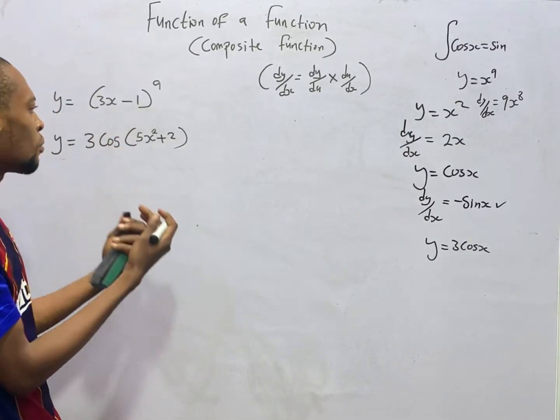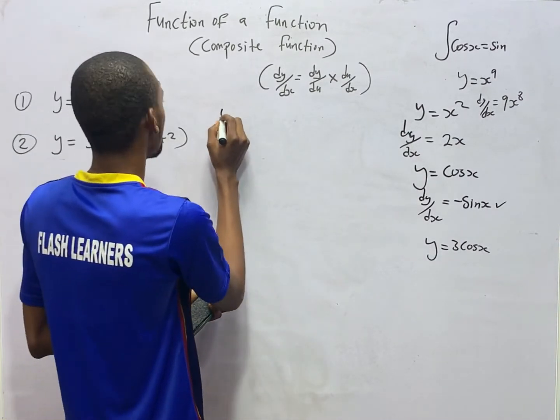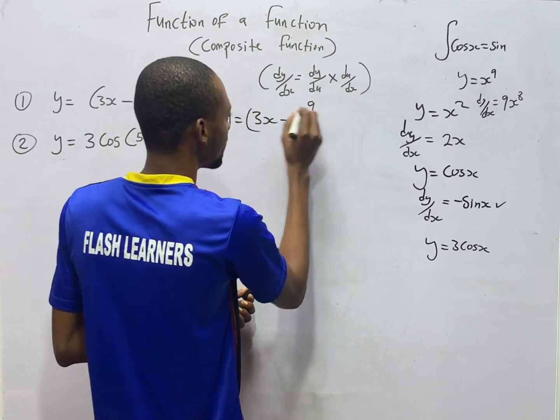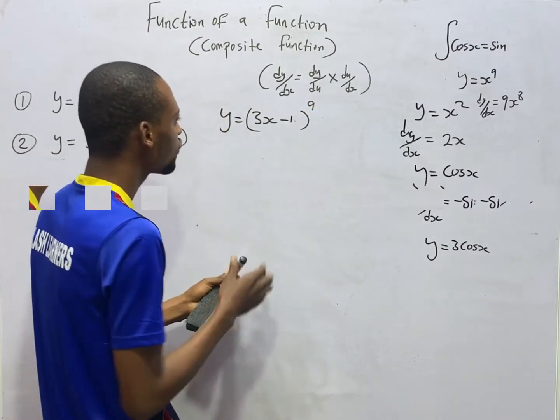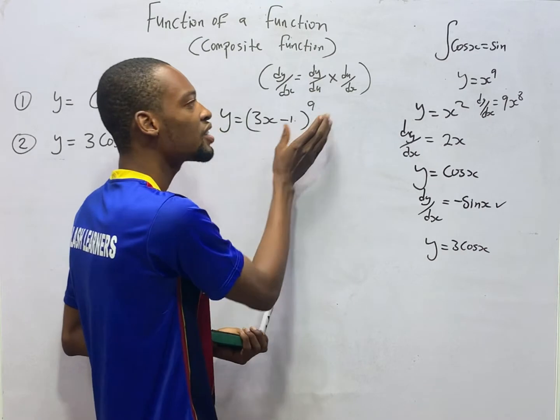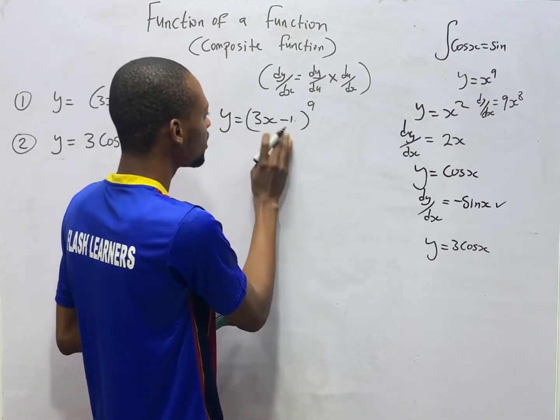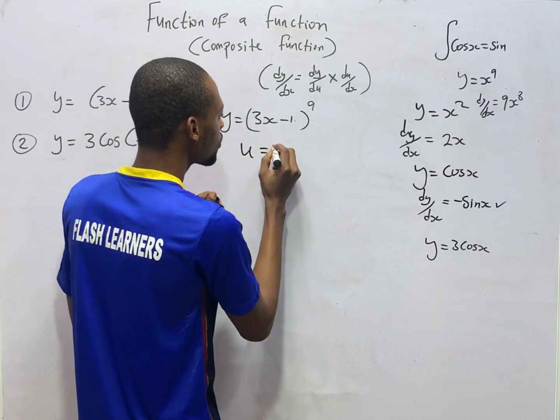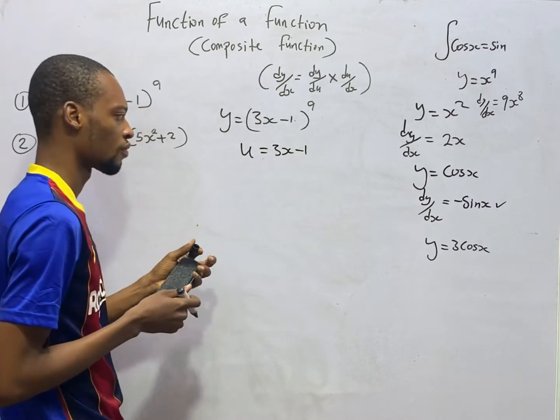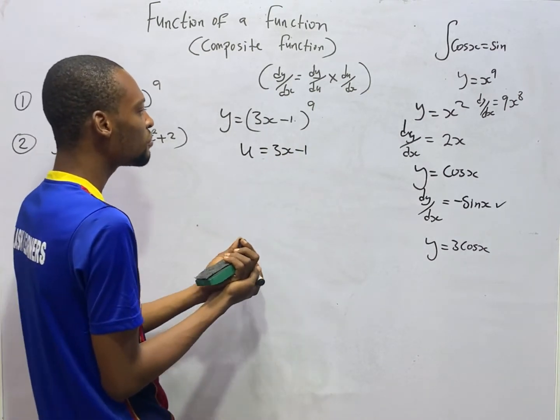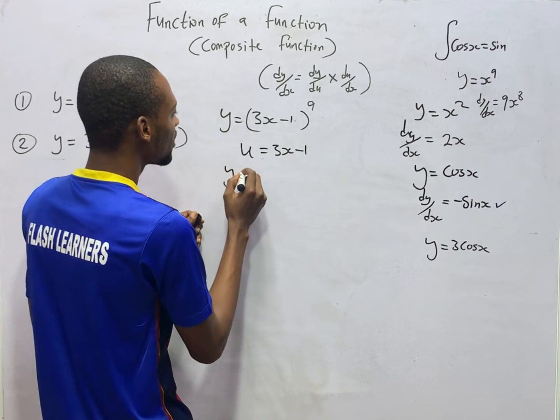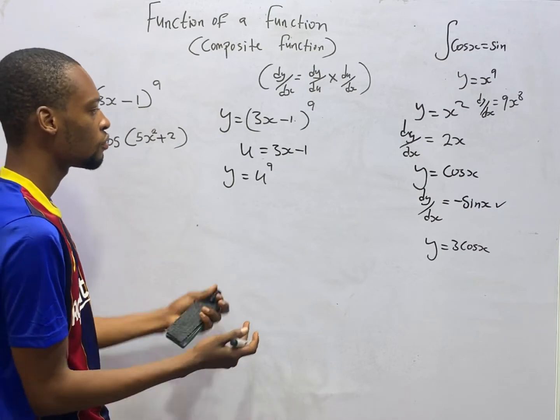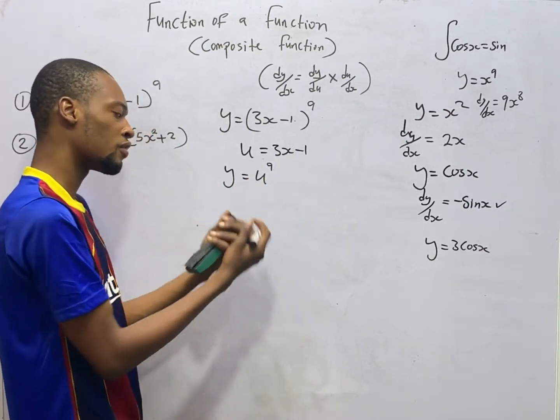Let's apply it to question number 1. Y equals (3x-1) to the power of 9. If y equals (3x-1) to the power of 9, u is simply this, which is carrying another function. So let u equals 3x-1. If u equals 3x-1, this simply means that y equals u raised to the power of 9. True or false? True. Because y is (3x-1) raised to the power of 9.